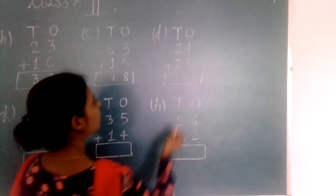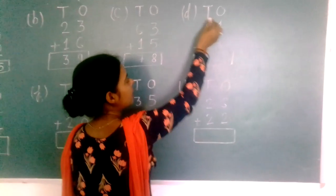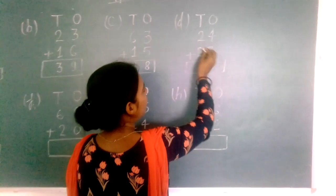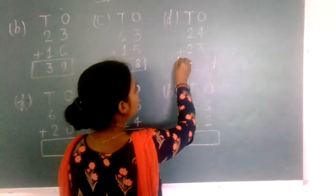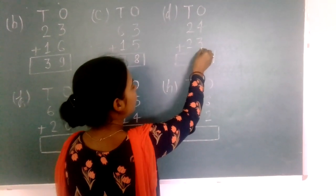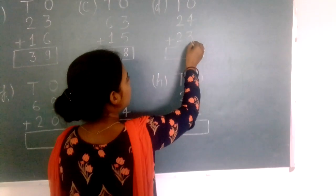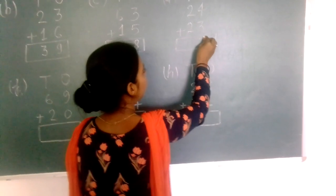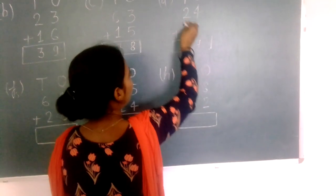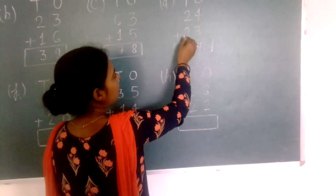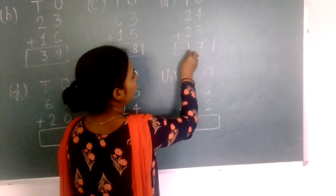Next: two tens, four ones (24) plus two tens, three ones (23). Four plus three equals seven. Two tens plus two tens equals four tens.